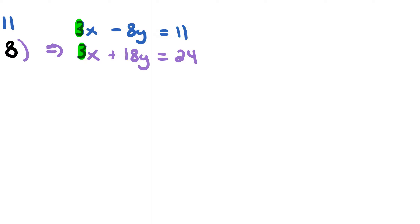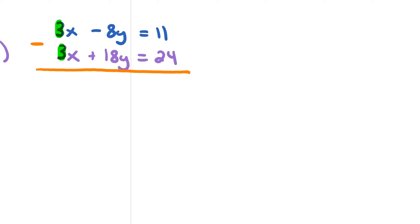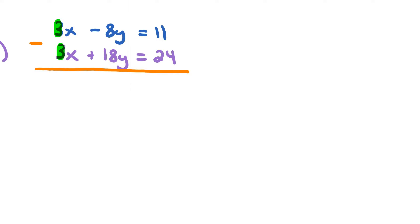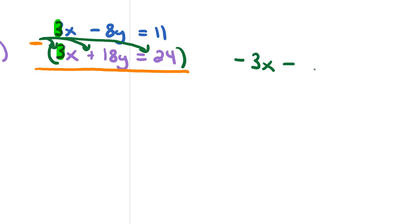Now you have to ask yourself: what can you do to eliminate the x variables — do you add the equations or subtract them? Well, you're going to subtract them, because if you added the equations you'd get 3x plus 3x, which is 6x. So you want to subtract the equations. Now when you're subtracting, remember this minus sign is really distributing onto everything in the second equation. So if I rewrite that, it would be negative 3x minus 18y equals negative 24.